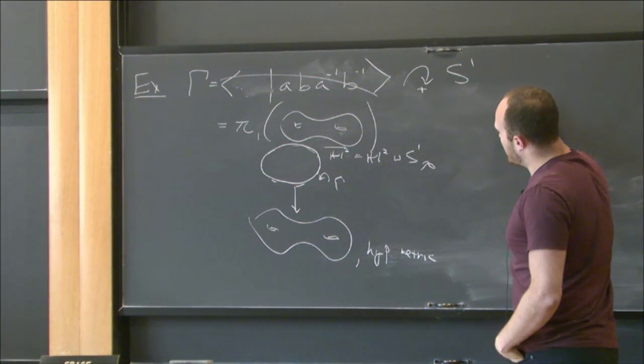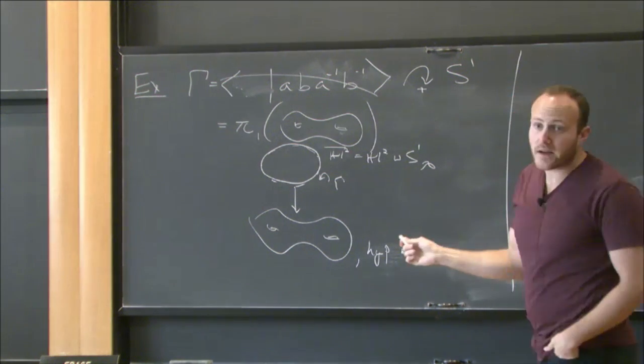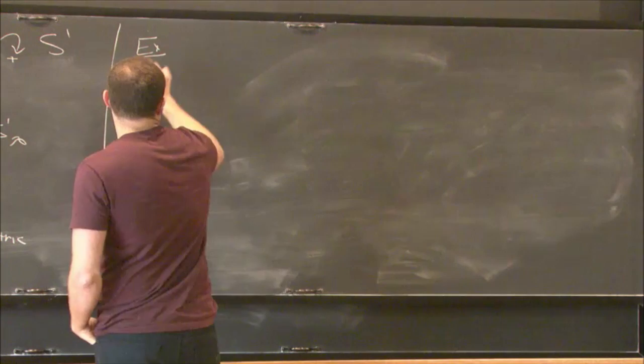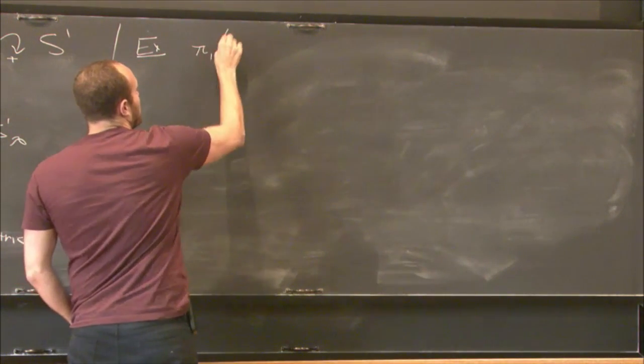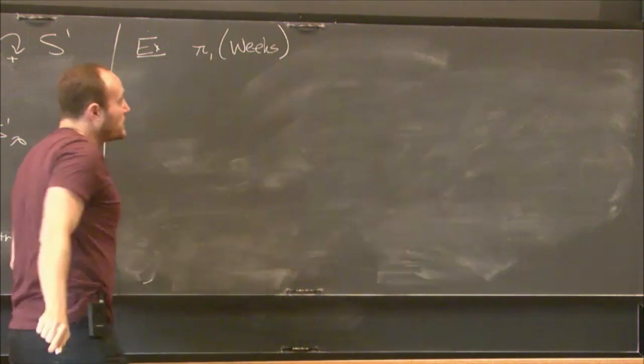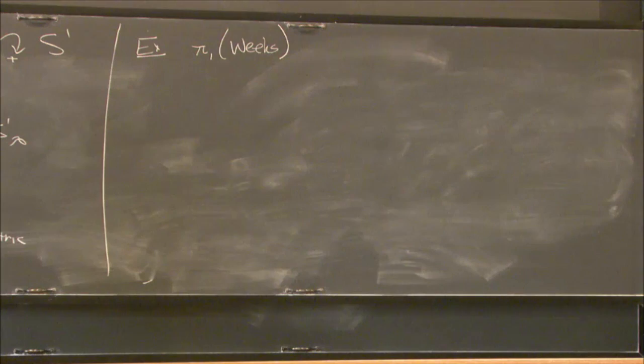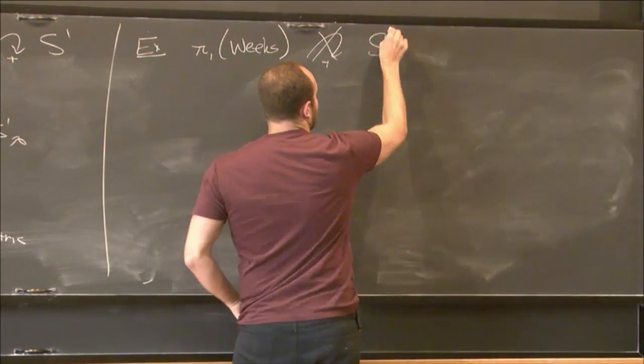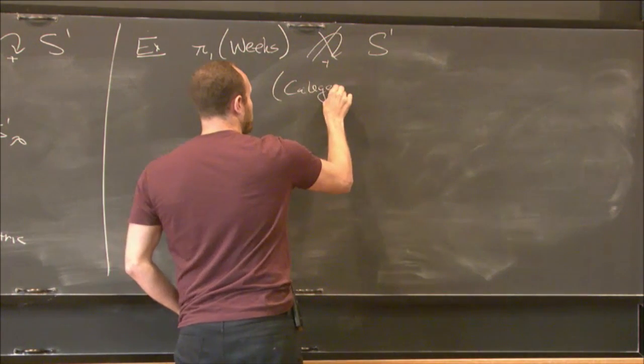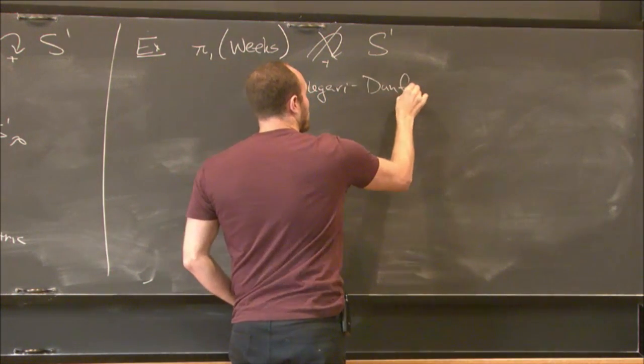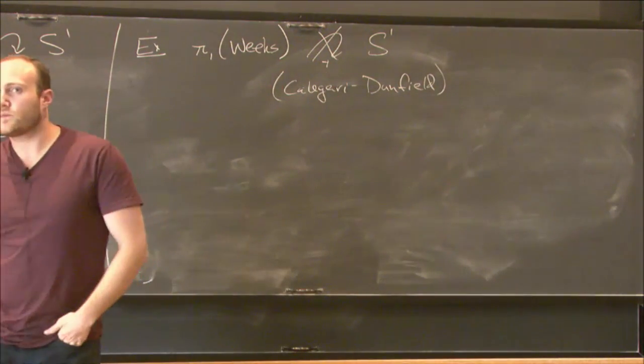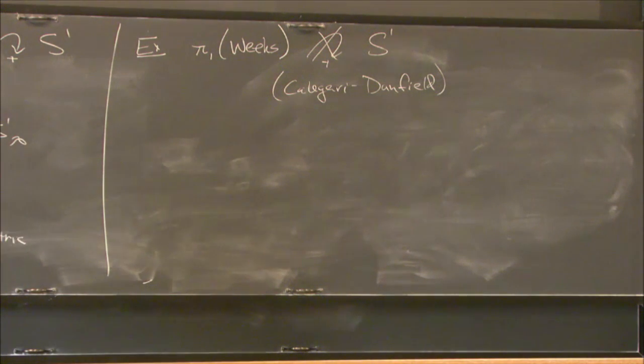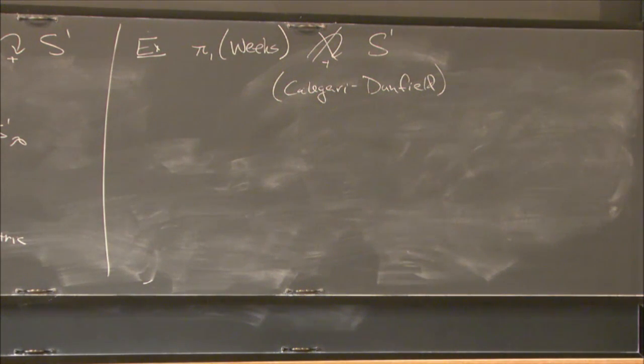Now, on the other hand, I should give you an example of a group that doesn't act on the circle. And I won't really tell you what this group is, but let's say it's the fundamental group of the weeks manifold. So this is the smallest volume closed hyperbolic three manifold. And the fact is that this doesn't have any actions on the circle. And this was proven by Caligari and Dunfield. And the idea is that admitting a circle action, if you think about it in the right way, is really a homological condition. And sometimes from a presentation of a group, you can just show that it has no circle actions. All right. So that illustrates the meaning of this question here.